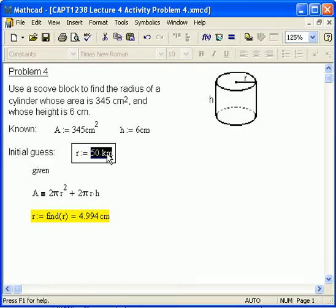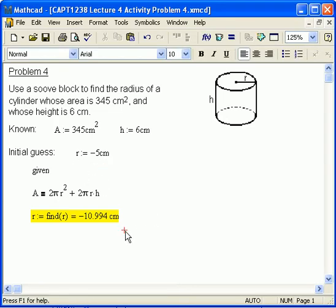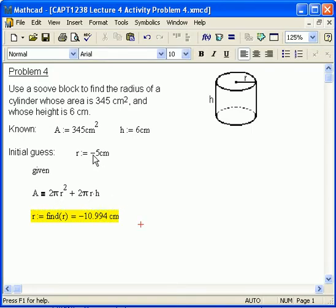But there is a problem. If I were to guess that R is equal to minus five centimeters, look what happens. Minus centimeters. Ah, now we have a problem. And that problem is that because we started with a negative value for R, and why would we? You could, but why would you? Recall from the previous problem, this is a quadratic, and there are actually two solutions. There's two values of R that will make this equation true. There's the five centimeter one and the minus 11 centimeter one. The minus 11 centimeter one is meaningless, but mathematically it does work.